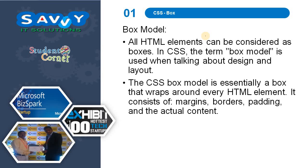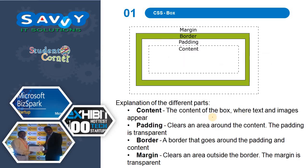The CSS box model is essentially a box that wraps around every HTML element. It consists of margins, borders, padding, and the actual content. These four are the main pillars of the box model.